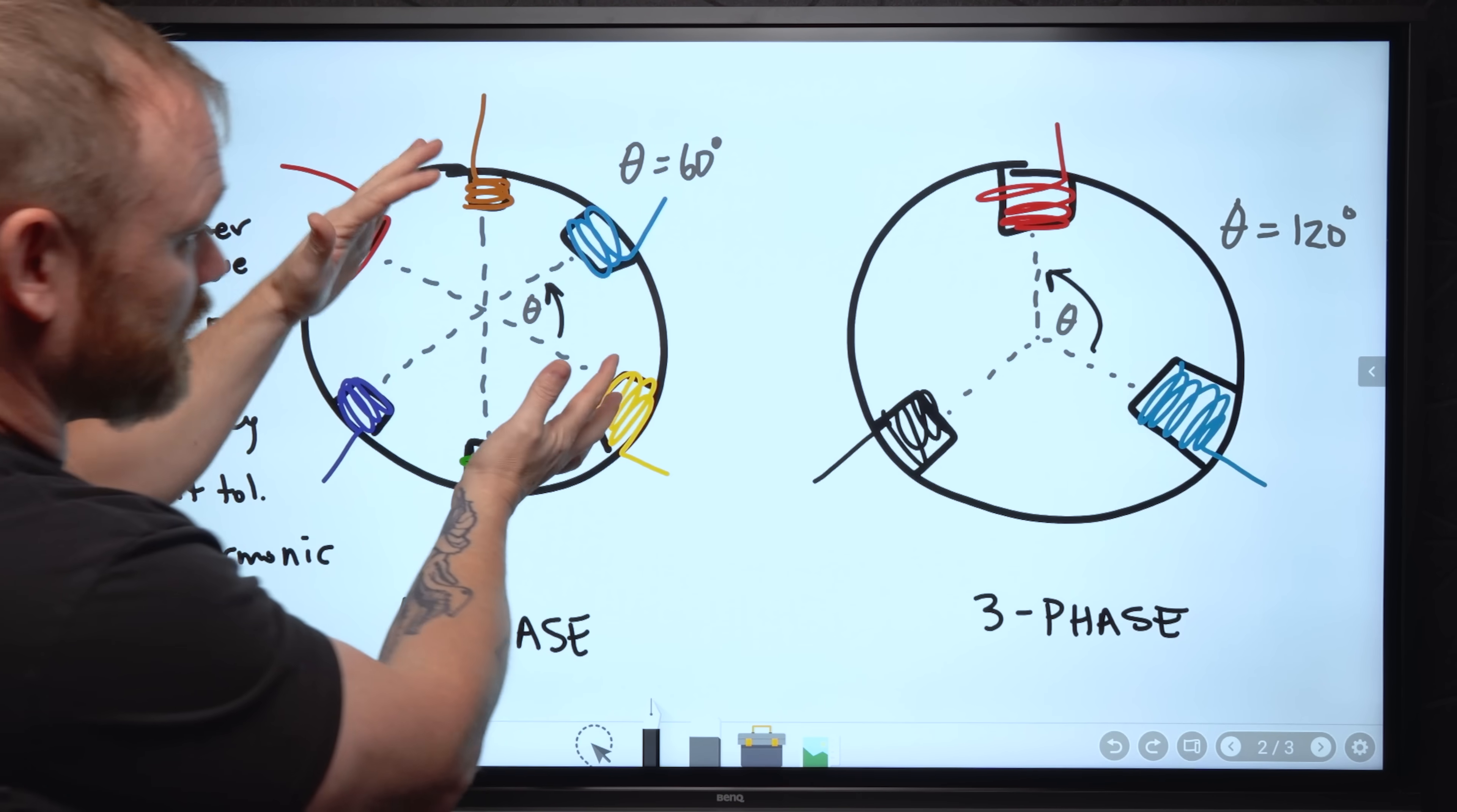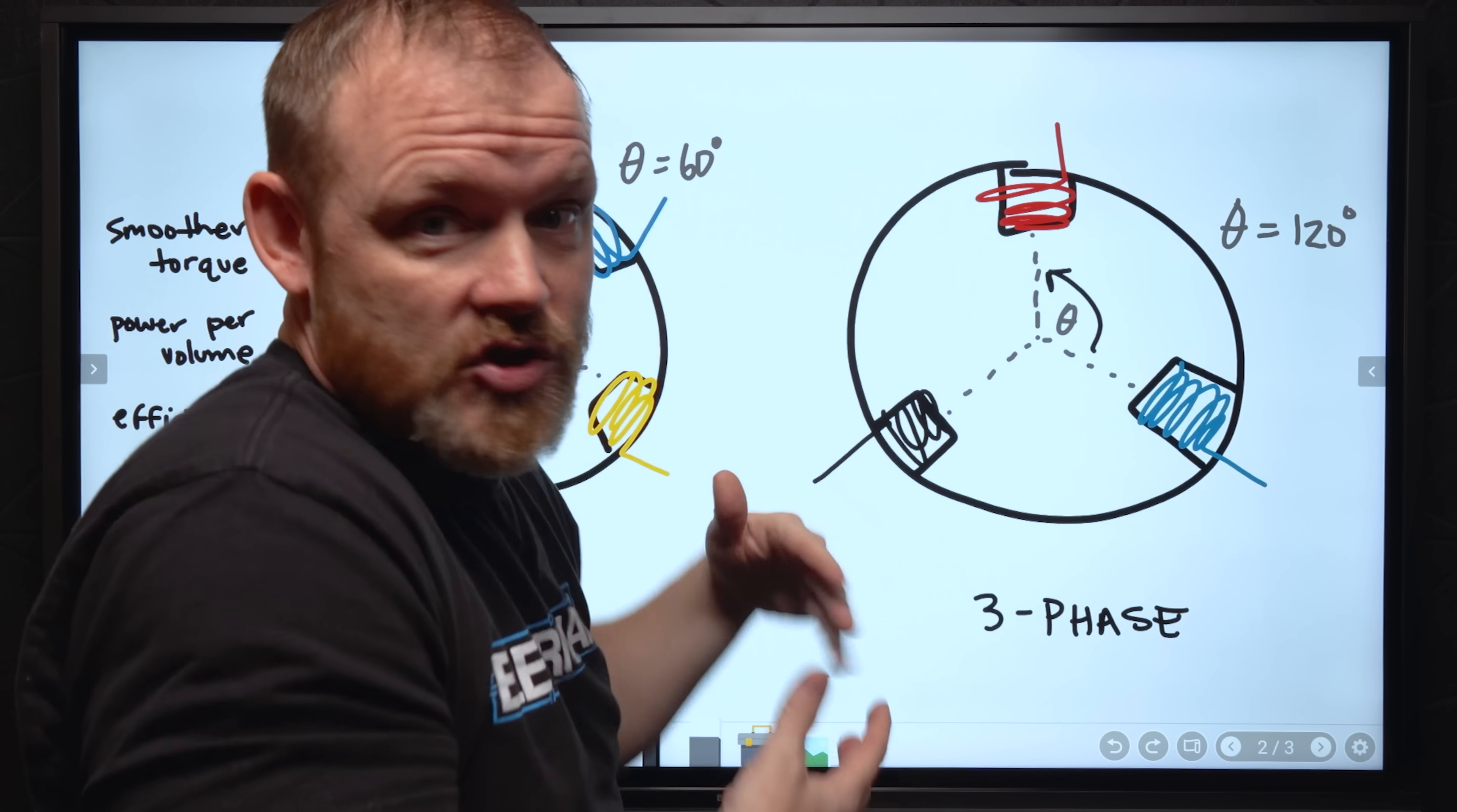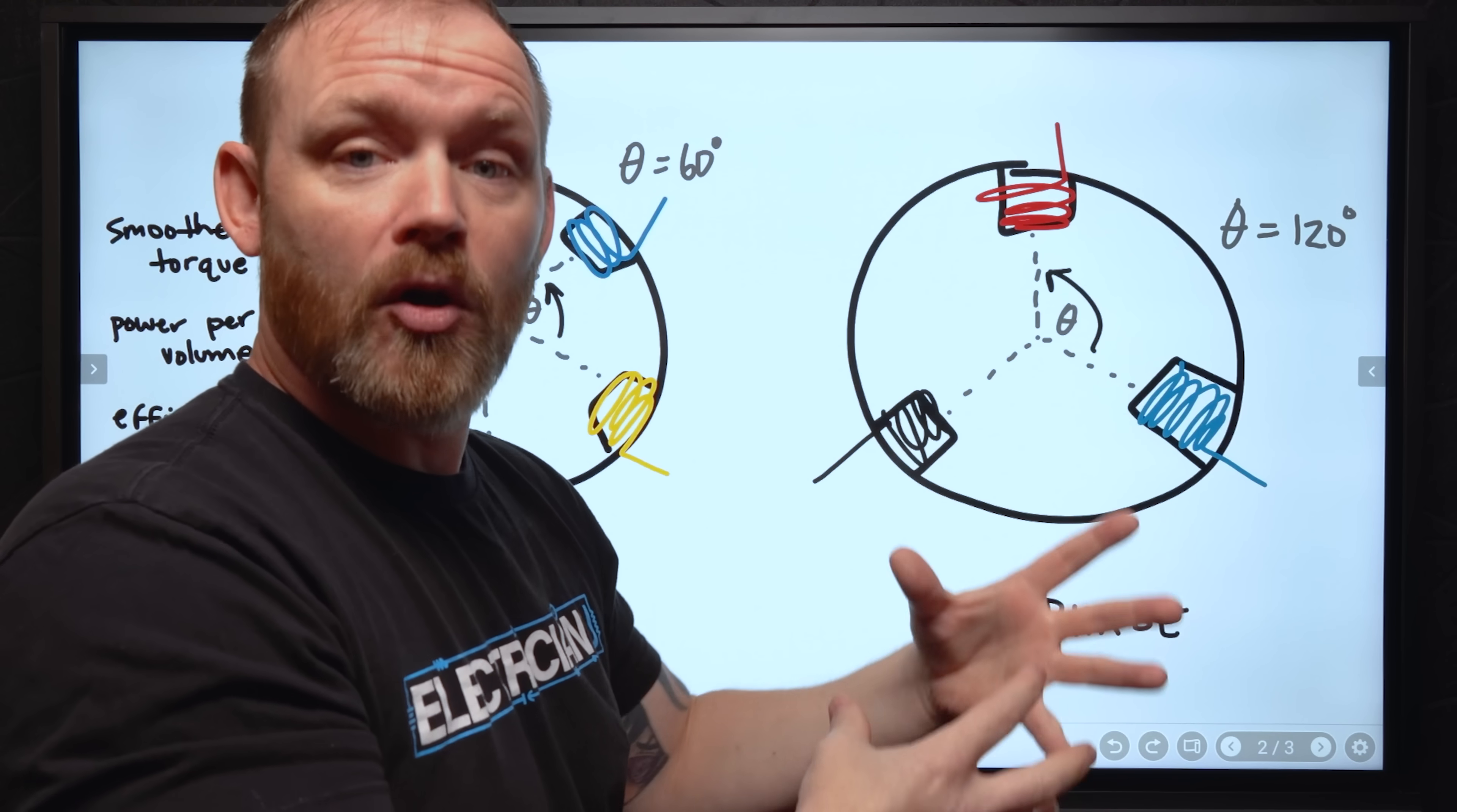There's also just the form factor, the amount of power that you can get in the same form factor. You don't have to increase the size of a motor that's six-phase. You just add more phases to it. So you can get more power produced like I was showing those sine waves earlier in the same form factor, in a smaller form factor.